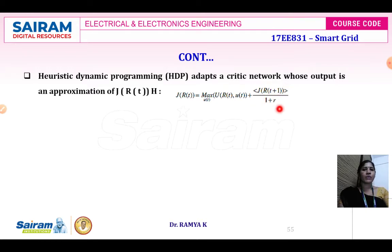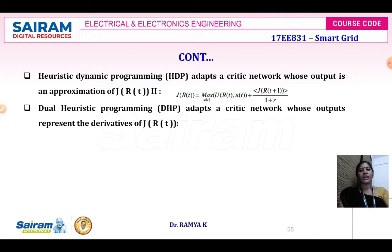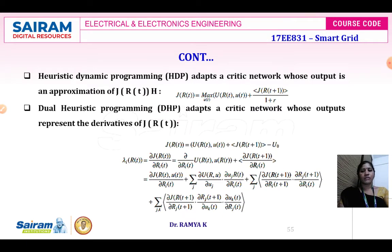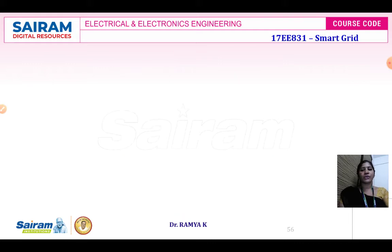In heuristic dynamic programming (HDP), the cost-to-go equation uses j(t). In the dual heuristic programming (DHP) method, the critic network output is represented as the derivative of j with respect to r of t. The objective function for dual heuristic programming is given accordingly.